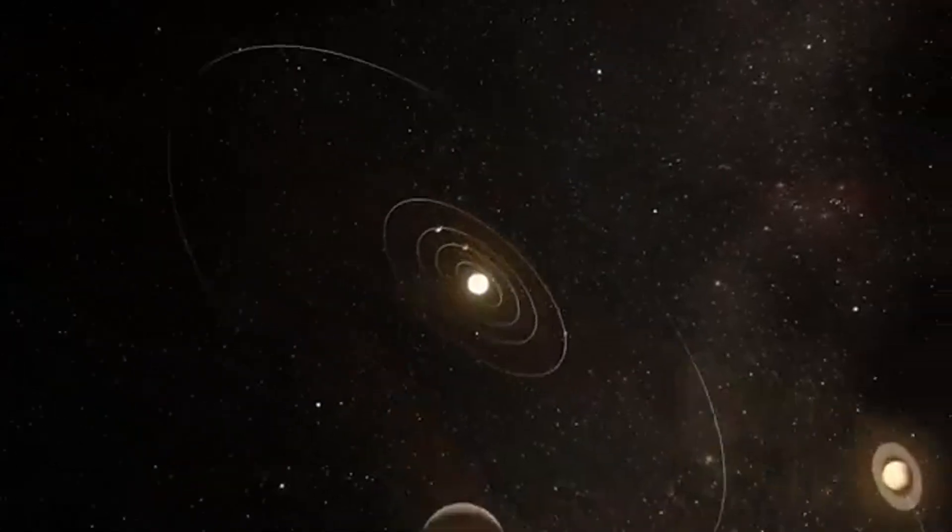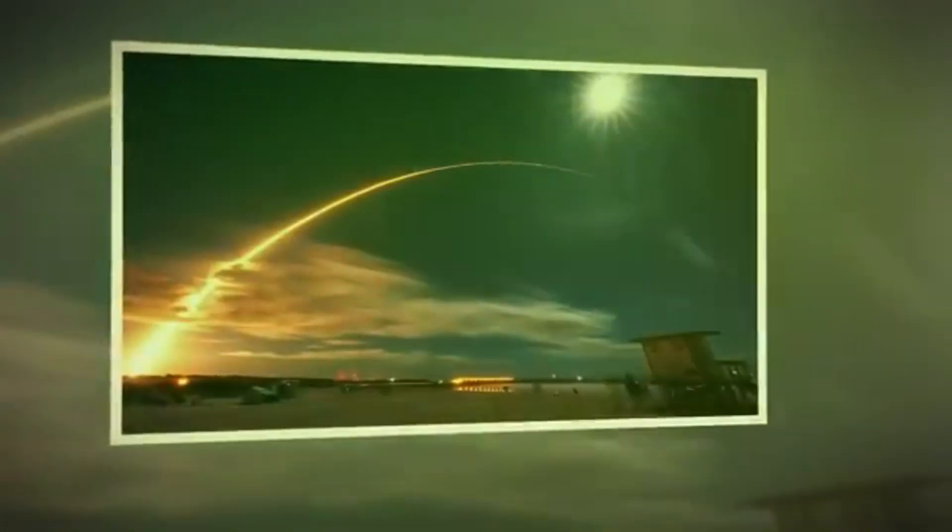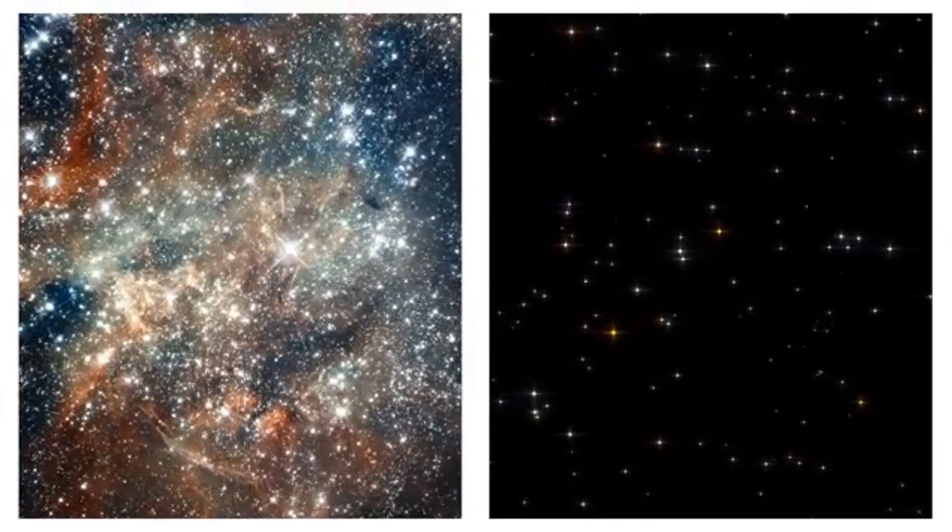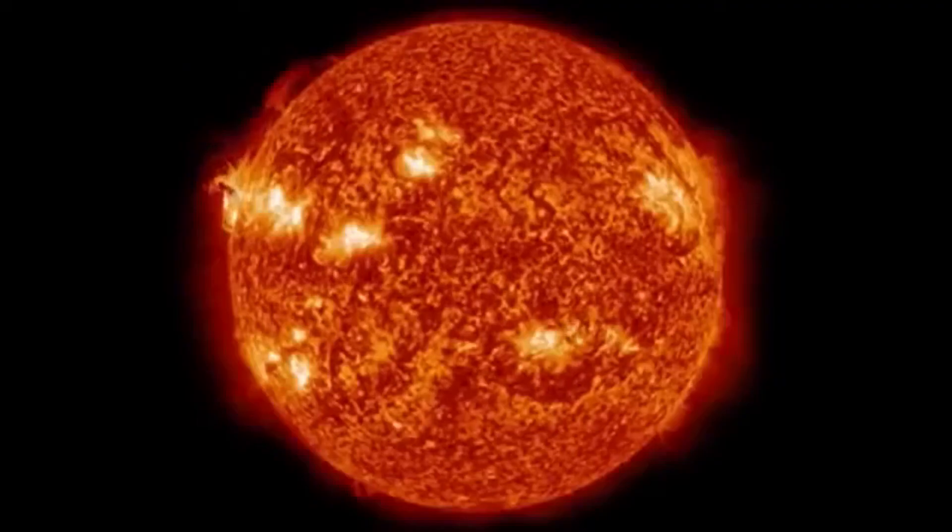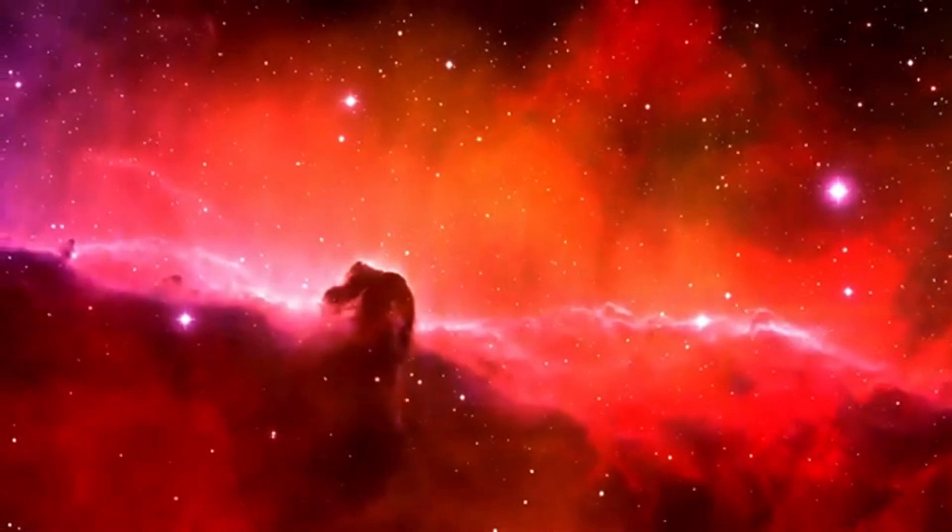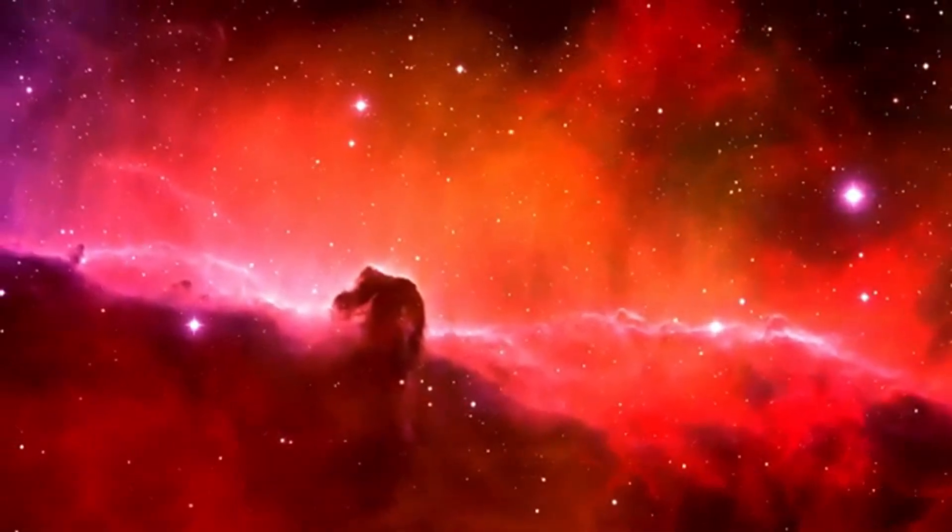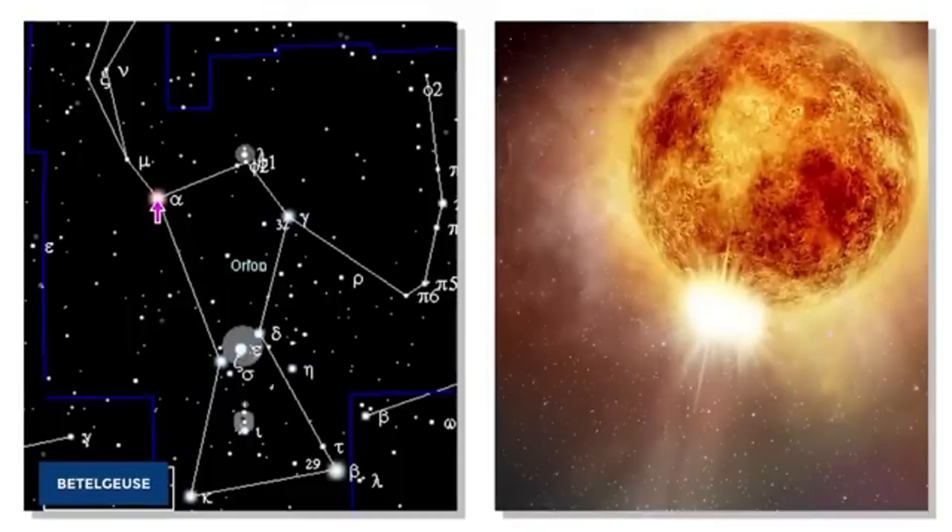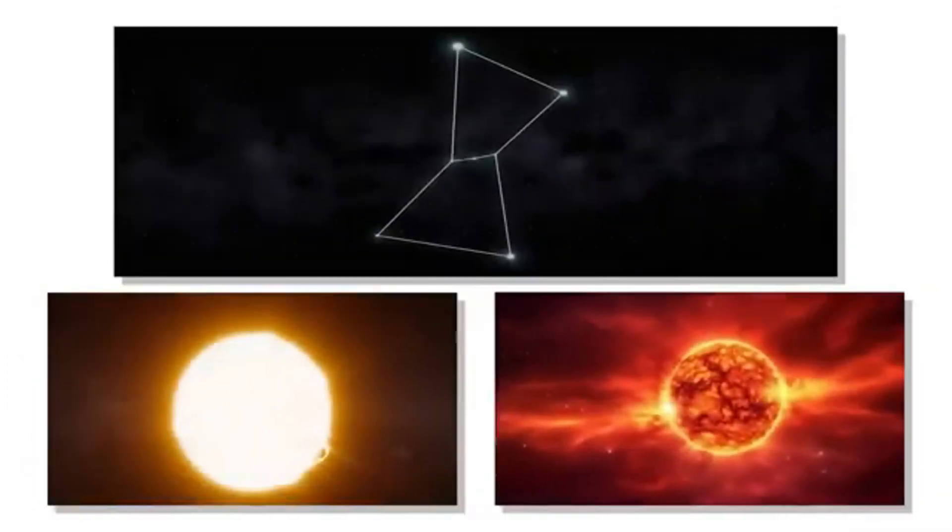Its current red supergiant phase is the culmination of millions of years of stellar evolution, a period marked by dramatic changes in processes that have transformed it from a hot, blue star to the red giant we see today. The life cycle of stars like Betelgeuse is a story of transformation, driven by the relentless forces of nuclear fusion and gravity.